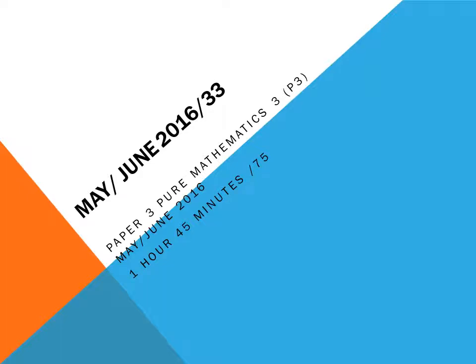Hello students, we are moving towards paper number May/June 2016 Zone 3. It carries 75 marks, 1 hour 45 minutes. First I should explain some tips to prepare Paper 3 for A-level Mathematics. You should remember that each of Paper 3 and Paper 1 carries 75 marks. If you have a strong grip on Paper 3, it will be very easy to perform in Paper 1.